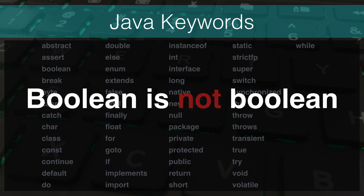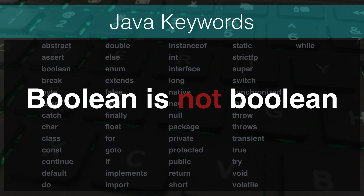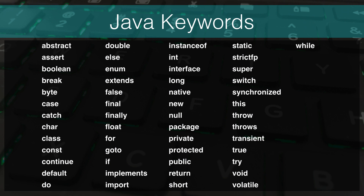For example, boolean is not Boolean — the capital B makes it different. When we create variables and types later, you are strongly discouraged from using any of these words with a different case as your identifier. You can do it, but that's not a good idea. I should note that true, false, and null are not really keywords — they are what's called literal values. For example, 23 is a literal number, and true is a literal boolean value. They are included in the keyword list of do-not-use for names, and that's why they are in there.